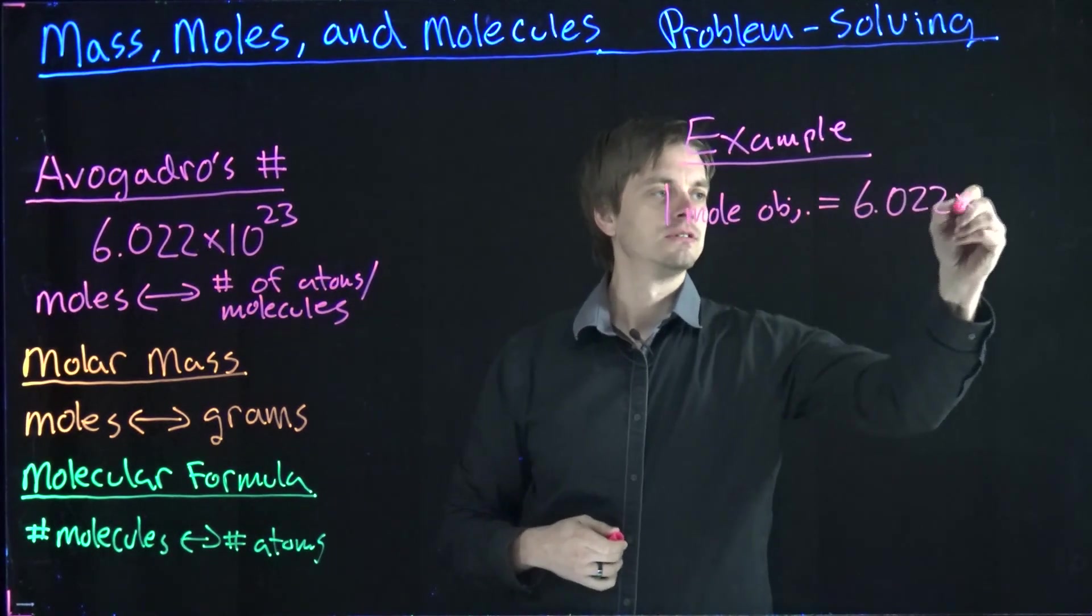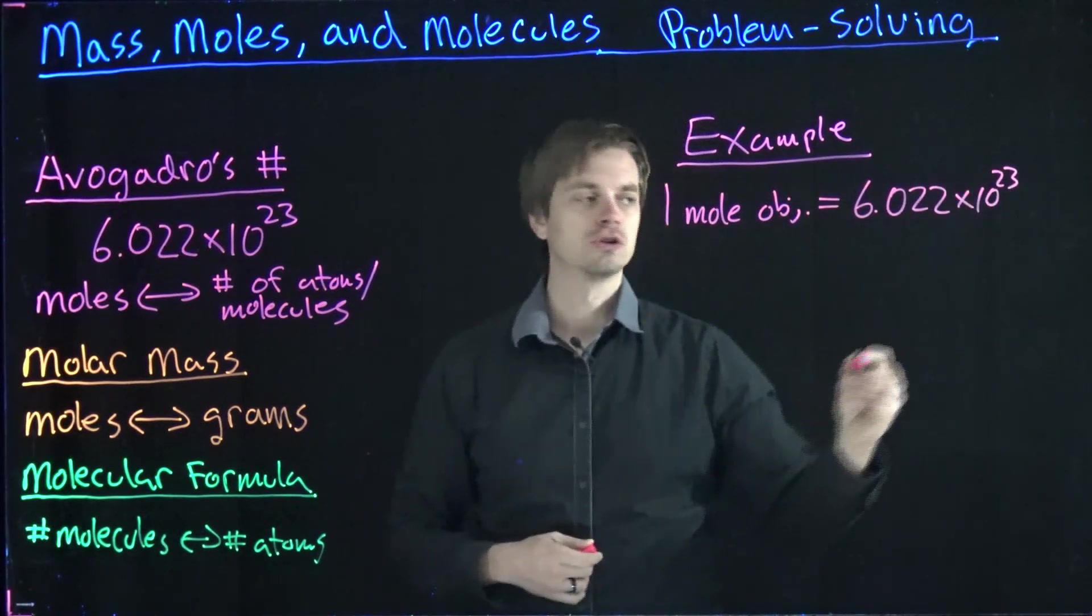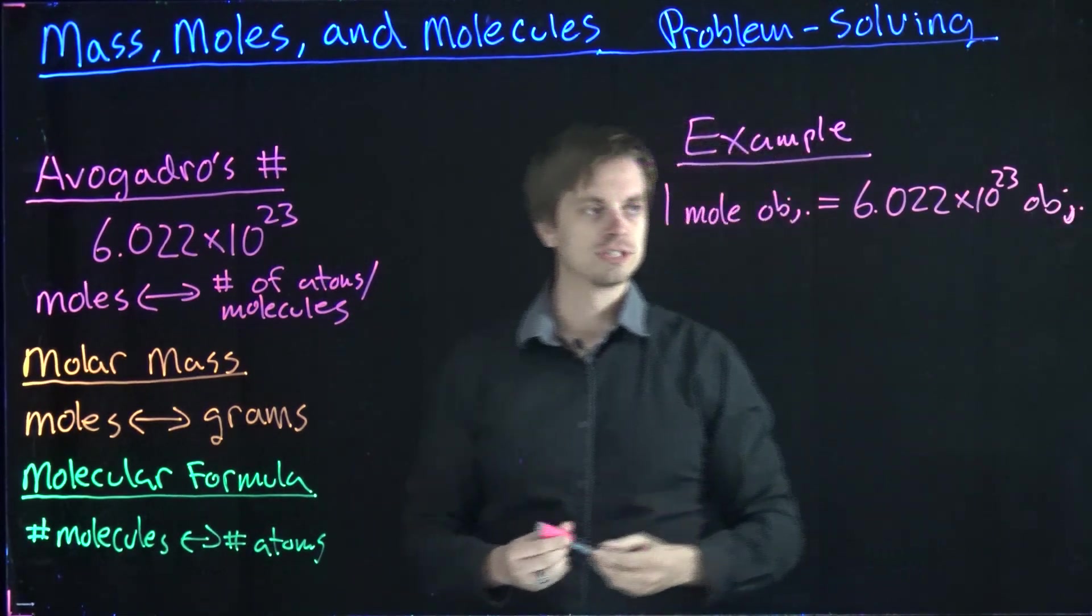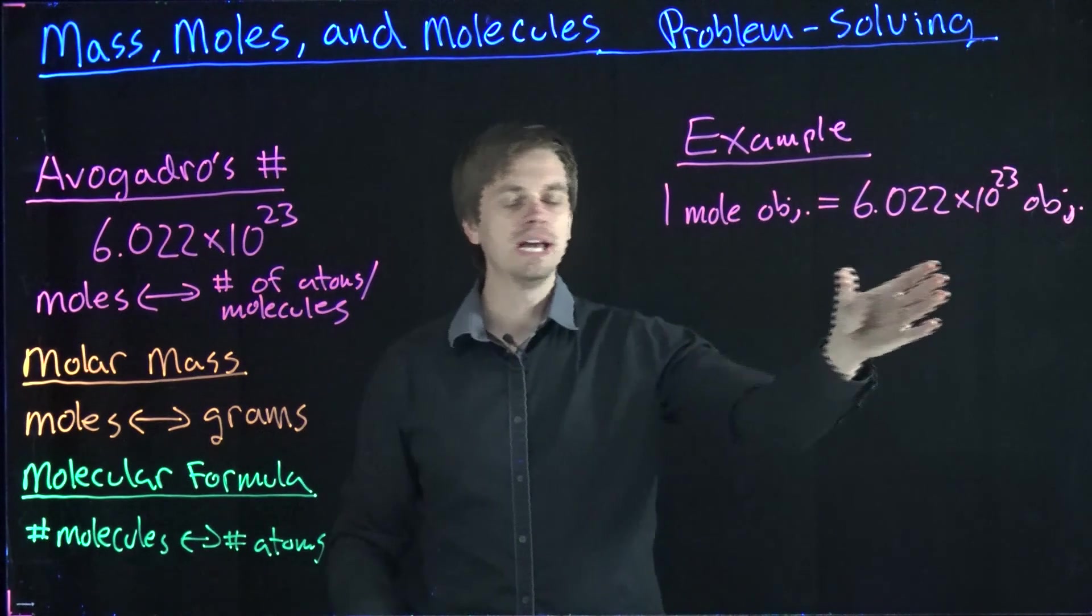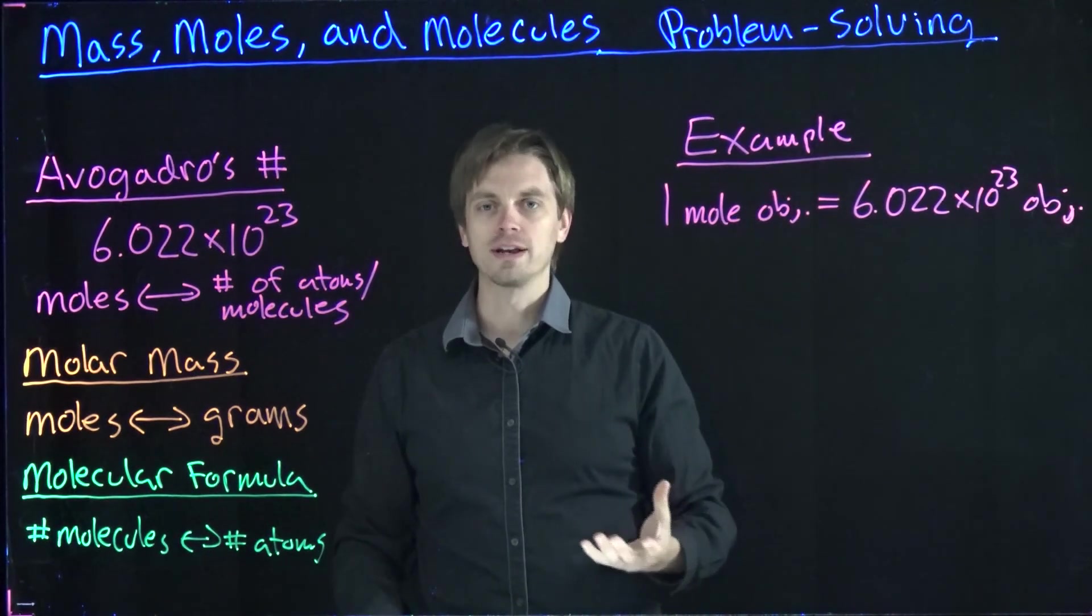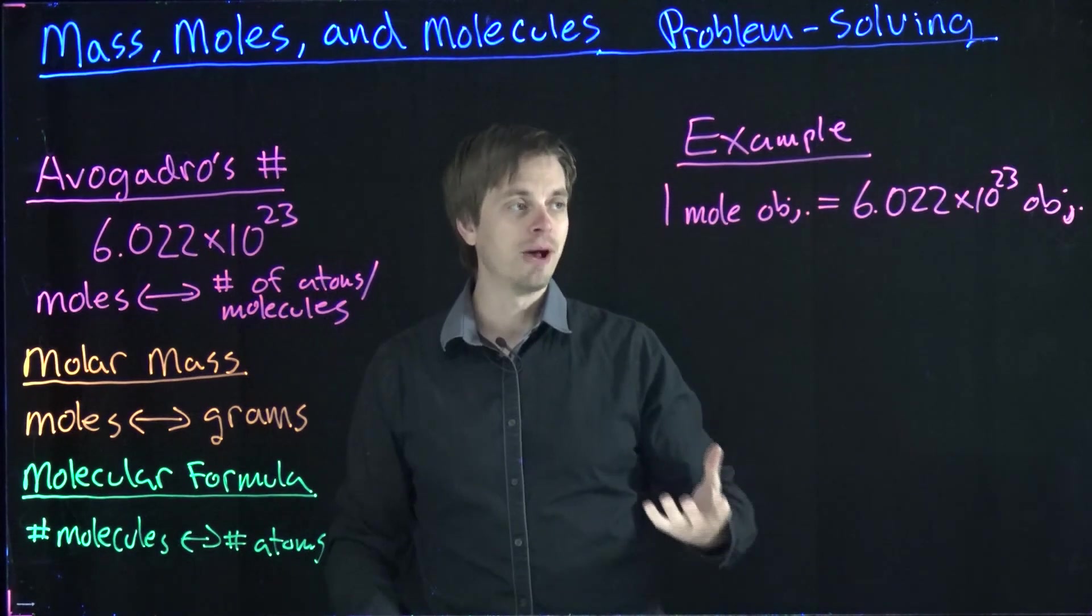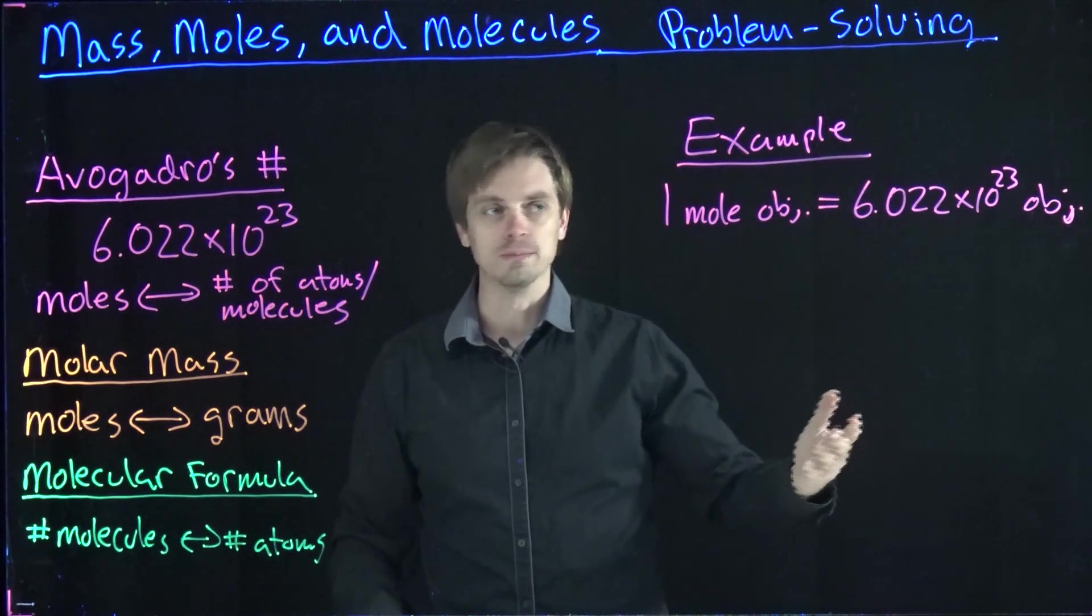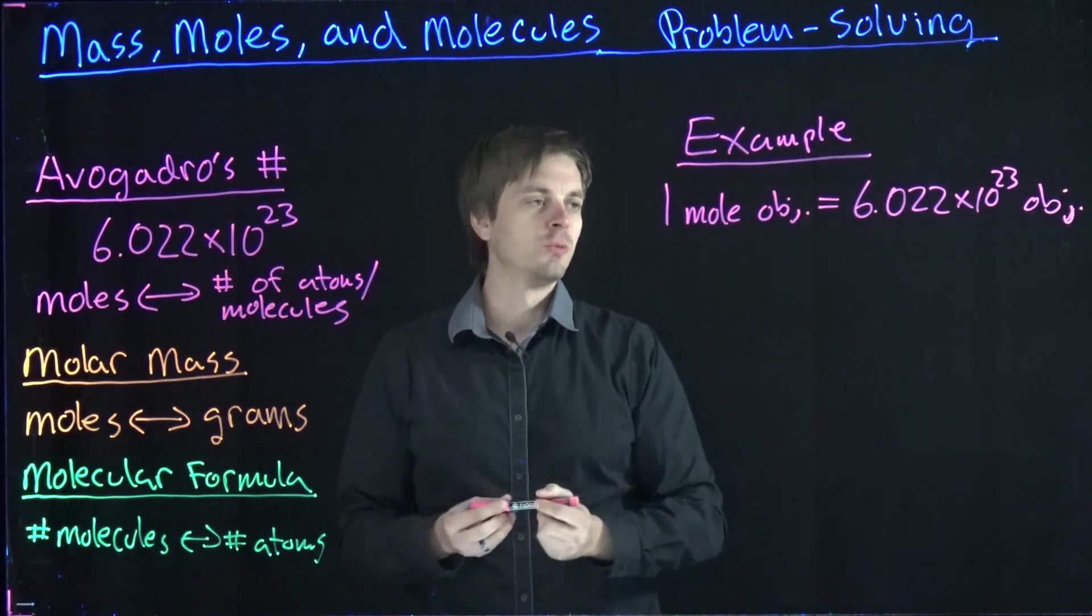The number needs to be this large. It's convenient for chemical applications simply because whenever we're dealing with macroscopic quantities of matter, subatomic matter, we are going to be dealing with a very large number of those molecules or atoms.